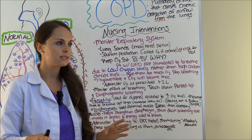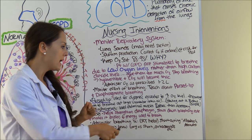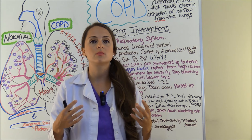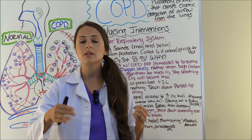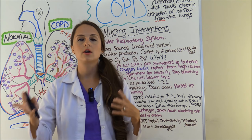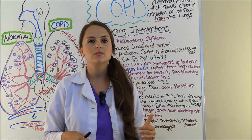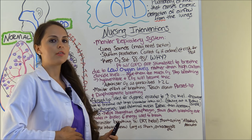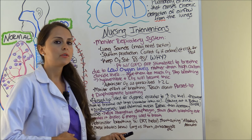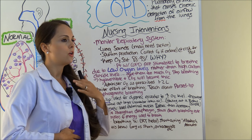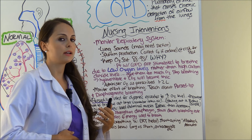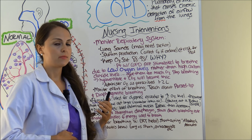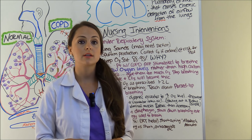Teaching diaphragmatic breathing will help strengthen that diaphragm, slow down the breathing rate, and decrease the energy used to breathe — because using those accessory muscles burns a lot of calories. That's why patients, especially those with emphysema, will have weight loss, and you need to encourage them to eat frequent small meals. To perform it, have the patient lay down with a pillow under their knees, one hand over the chest and one hand on the abdomen. They will inhale using the abdominal muscles without moving the chest, then breathe out using the abdominal muscles instead of the accessory muscles.